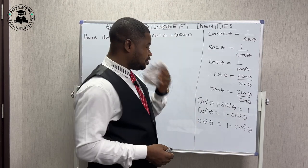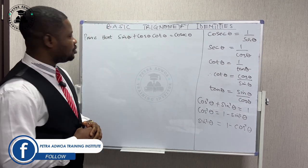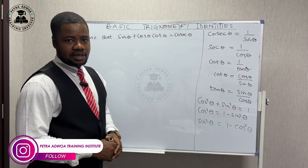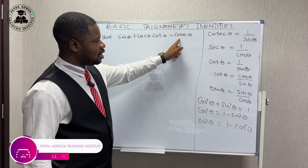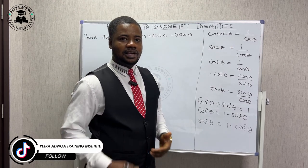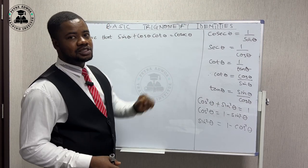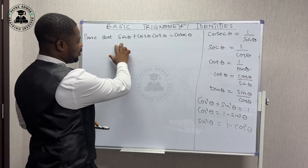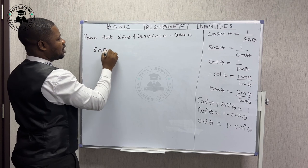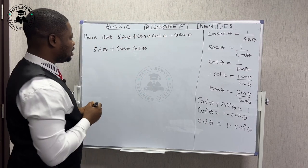Now we know these basic identities. Let's look at how we are going to use them to solve this. We are to prove that sine theta plus cos theta times cot theta is equal to cosec theta. We know that cosec theta is the same as one over sine theta, so we have to prove that working on the left side gives us one over sine theta. It's going to be very easy and interesting if we prove from left to right.